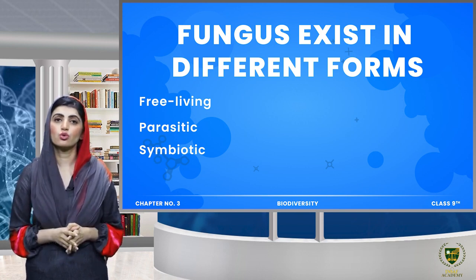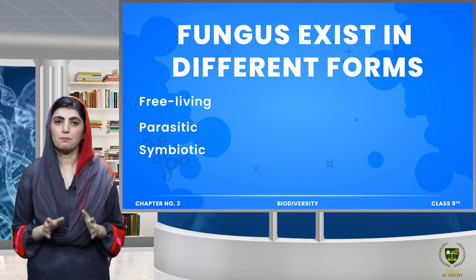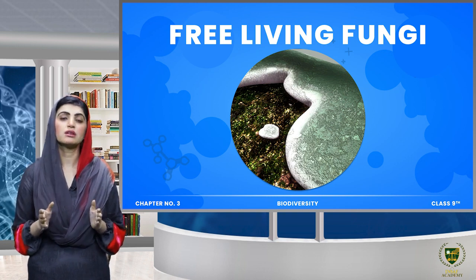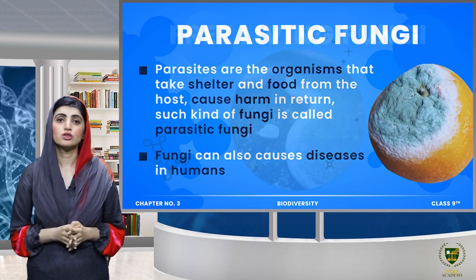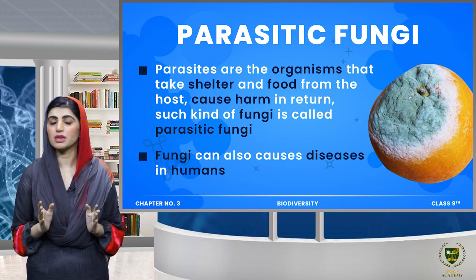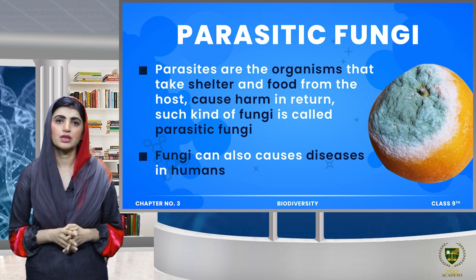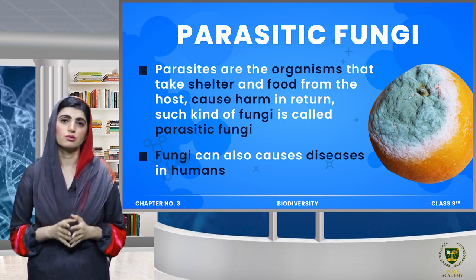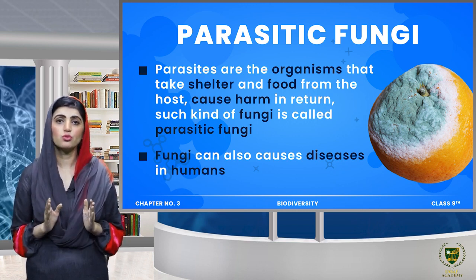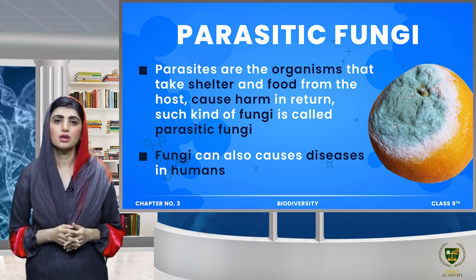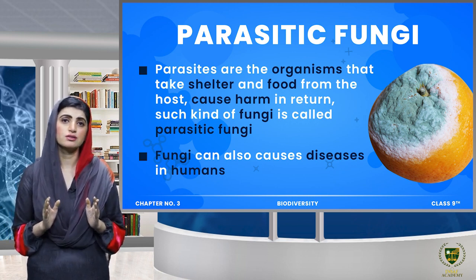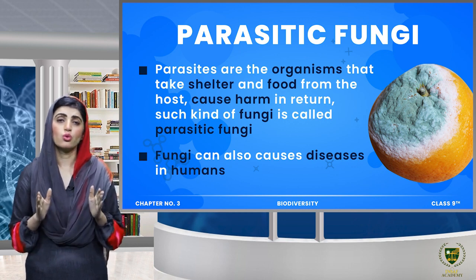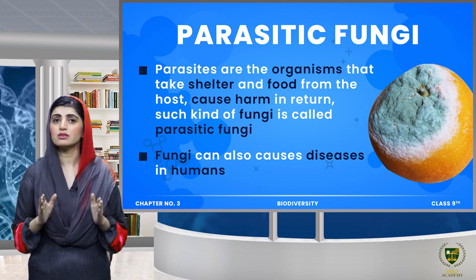If we look at the forms in which fungi exist in the environment, fungi can be free-living, parasitic, and also symbiotic. Some fungi can live independently, but some types are parasitic. A parasite is an organism that takes shelter and food from another organism — its host — but in return causes harm to that organism or causes disease in the host.